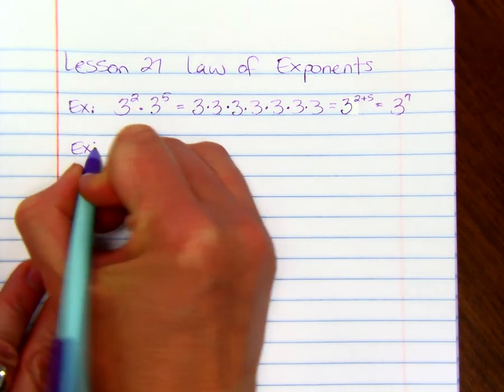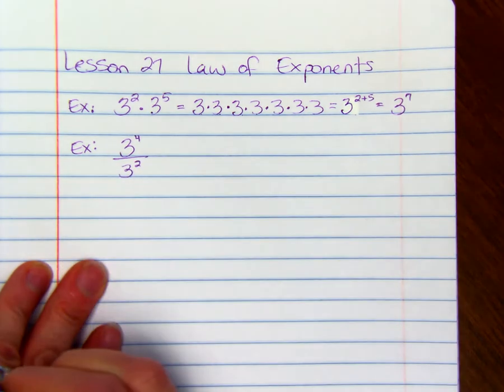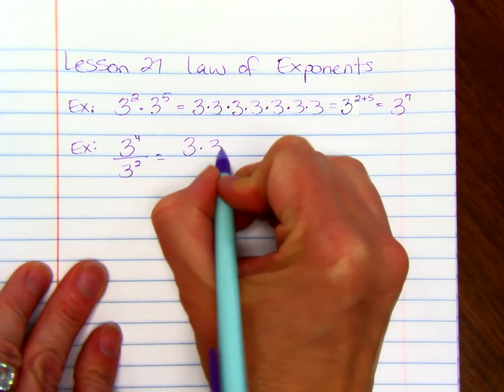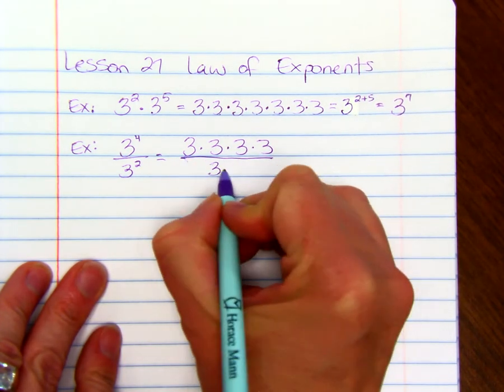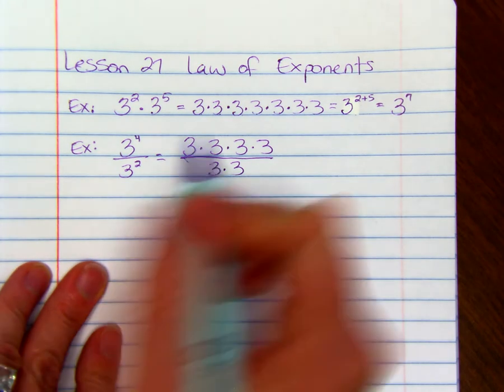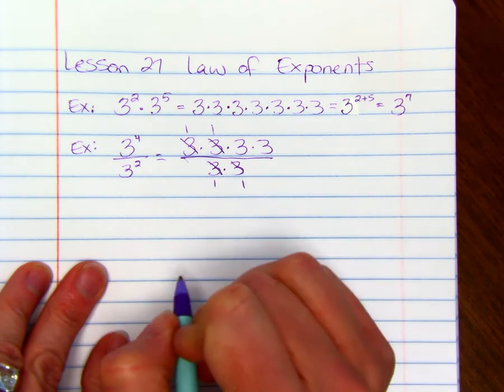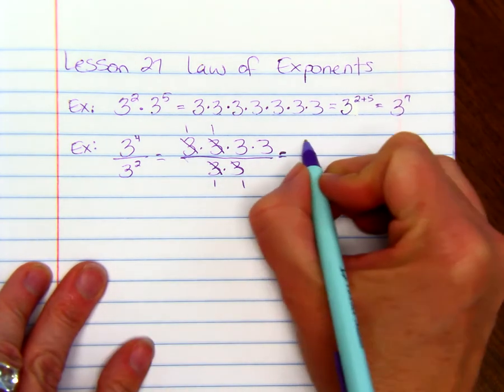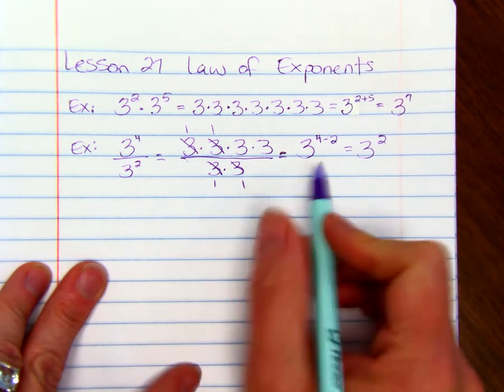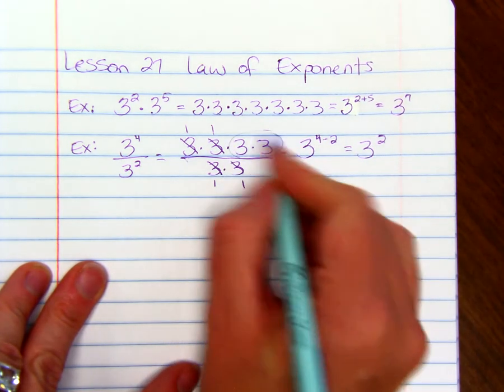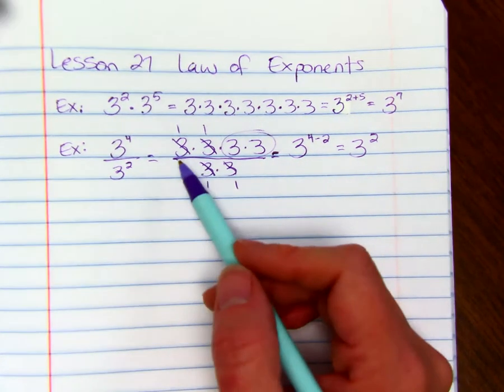An example with dividing exponents, let's say we had 3 to the 4th divided by 3 squared. So what this means is we're going to have 4 threes multiplied together in the numerator, and 2 of them in the denominator. Now we can cancel one of them, and we can cancel another one of them. And that just equals 3 to the 4 minus 2, or 3 squared, which is what we have left in the numerator.